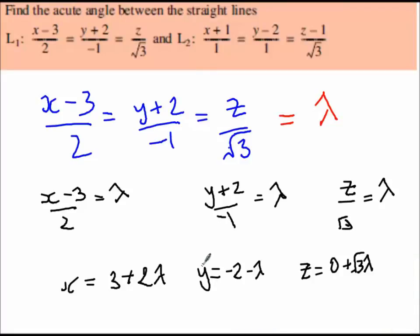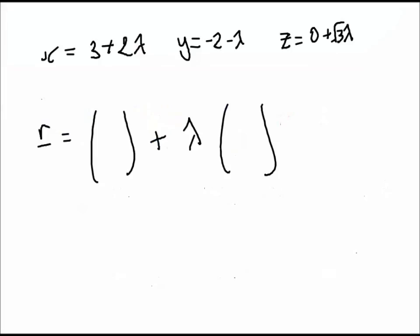Welcome back. If you've done that correctly, you should have these two extra equations. This is in parametric form. We can easily convert this into vector form using the following notation. r is our position vector, with three components — the x, y, and z components — because we've got three dimensions. We've got a position, this is our point A, and we've got our direction multiplied by a number, in this case our parameter lambda.